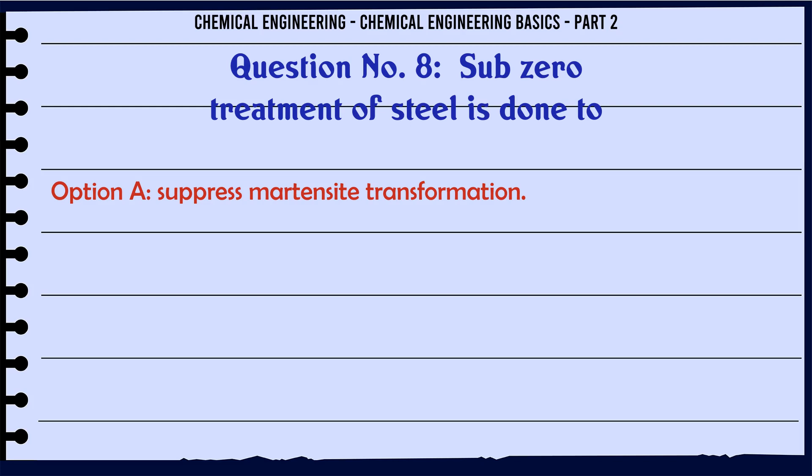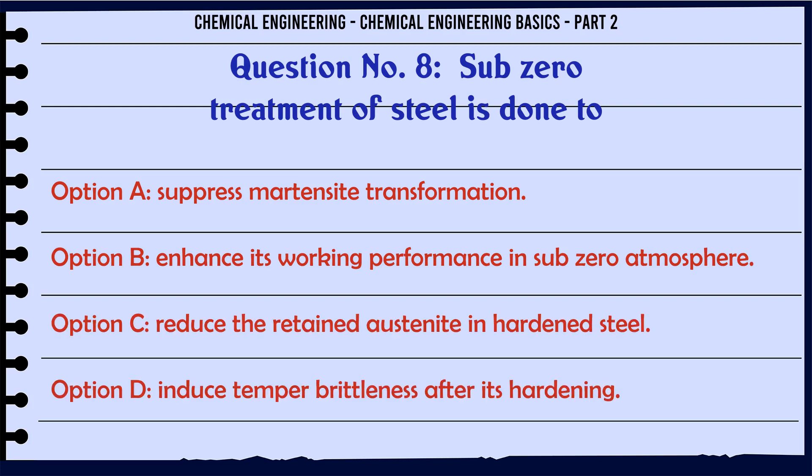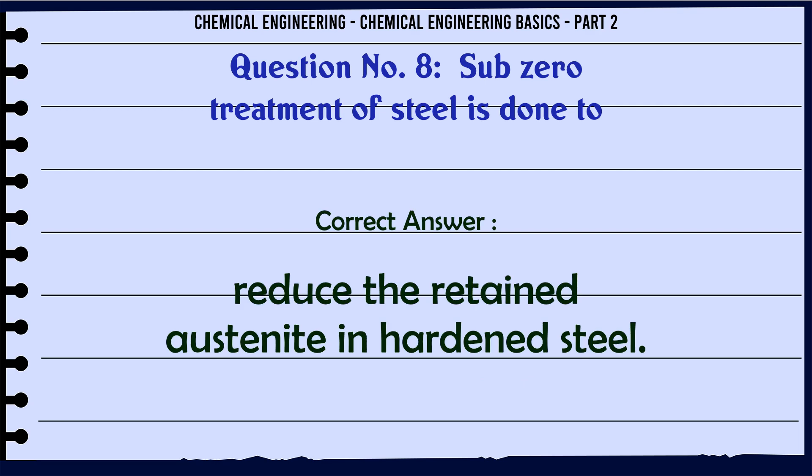Subzero treatment of steel is done to: a) suppress martensite transformation, b) enhance its working performance in subzero atmosphere, c) reduce the retained austenite in hardened steel, d) induce temper brittleness after its hardening. The correct answer is: reduce the retained austenite in hardened steel.